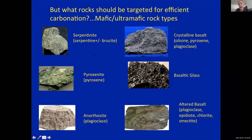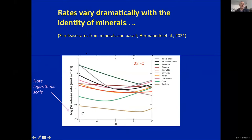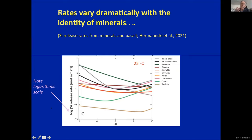Here I've got a comparison of the silica release rates of various different minerals common in mafic rocks. This comes out of a kinetic database that we're compiling currently with Matilda Hermansky, one of our postdocs. The point is this is a logarithmic scale — the rates of these various minerals vary by perhaps five orders of magnitude. Something at the fast end may react to completion in about a week, whereas it might take 13,000 years to complete a reaction in the slower reacting minerals.